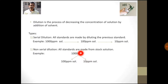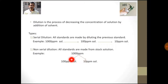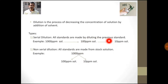In non-serial dilution, both the 100 ppm and 10 ppm solutions are prepared directly from the 1000 ppm stock solution. So in serial dilution, all standards are made by diluting the previous standard, whereas in non-serial dilution, all standards are made from one stock solution.